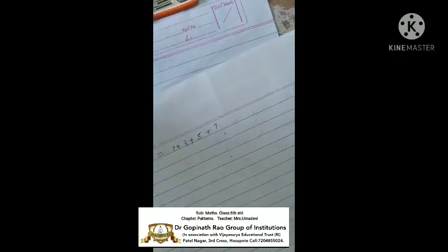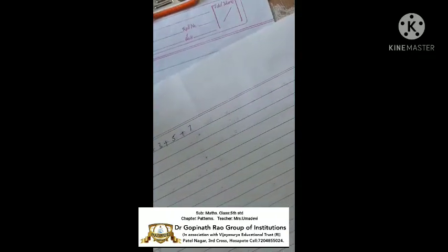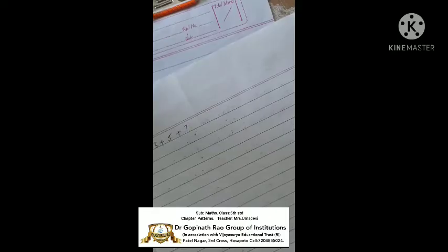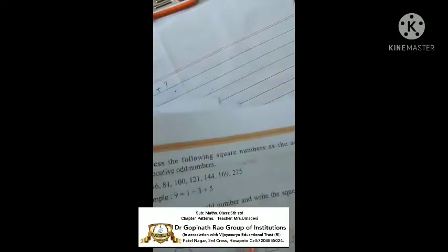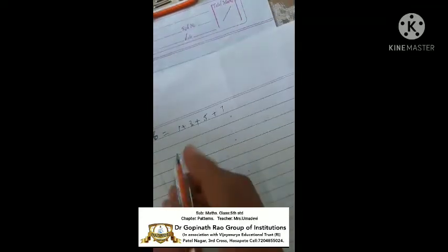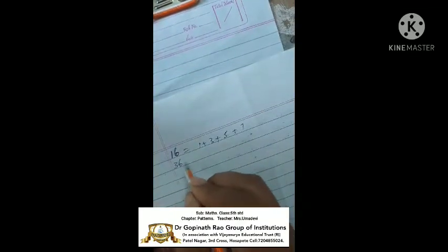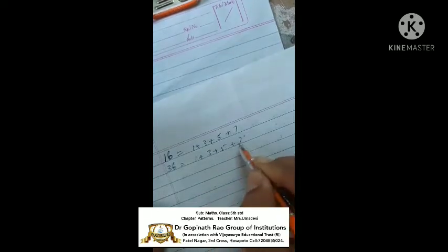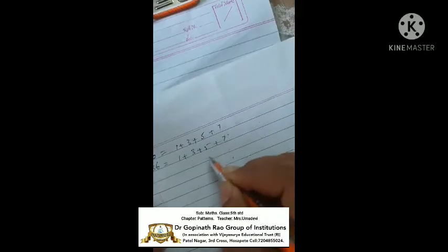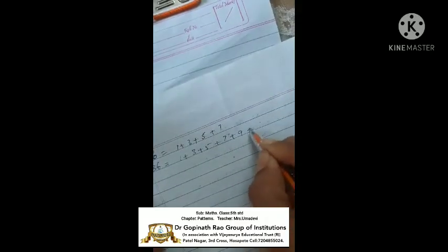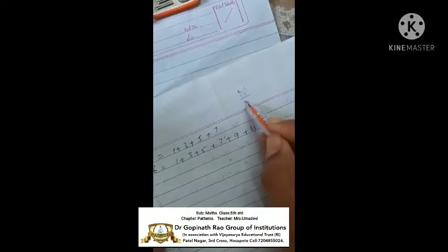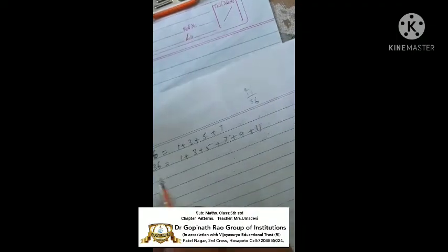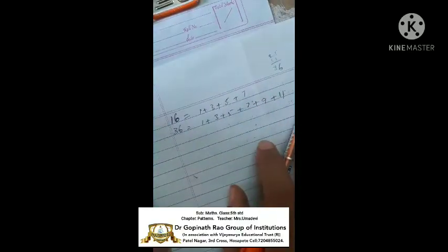Next number is 36. For 36, how to add? Use 1, 3, 5, 7, 9, 11. Observe: up to 16, then 16 plus 9 is 25, 25 plus 11 is 36. Comes as 36, using only odd numbers.